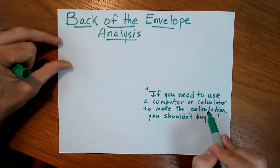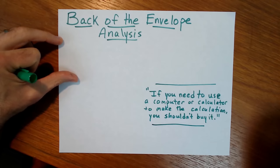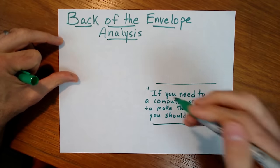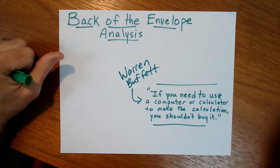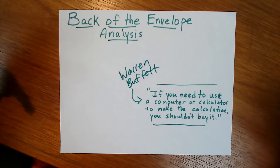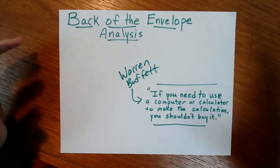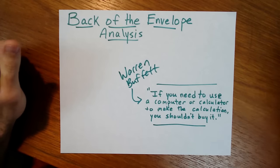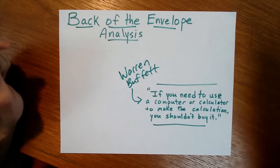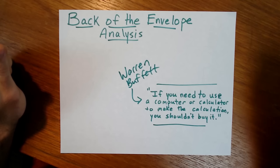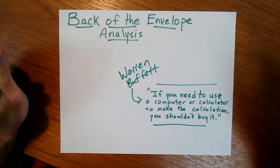The quote said: if you need to use a computer or a calculator to make the calculation, you shouldn't buy it. The answer is Warren Buffett — multi-billionaire investor. He said if you need to use a calculator or computer to make the calculation, you shouldn't buy it. A good deal — in his opinion, and I've found it to be the same — you should be able to approximately calculate the numbers. If it jumps off the paper and says, wow, this is a good deal, then you move forward. If you have to get so precise and calculate to the third decimal place, you're trying too hard.